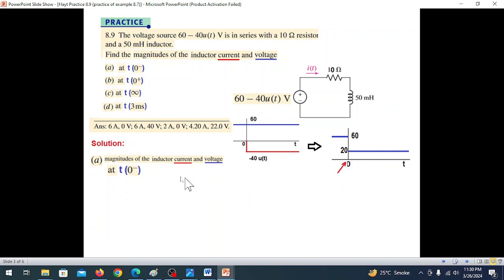Part (a): magnitude of current at t=0-. At 0-, the circuit is already in steady state with 60 volts applied. The inductor behaves like a short circuit, so i(0-) equals voltage divided by resistance, which is 6 amperes.